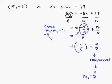M1 times M2 is equal to negative 1. So negative 4 3rds times 3 4ths. Negative 4 times 3 is negative 12. And 3 times 4 is 12. And that checks out.